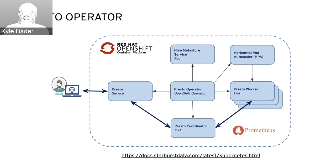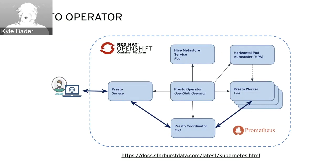The most recent contribution done in conjunction with Starburst was making available an operator in the OpenShift catalog. If you go to the big data section of the catalog in an OpenShift 4.2 cluster, you'll see an option to deploy a Presto operator through the OLM. That will add custom resource definitions to your Kubernetes cluster so that you can declaratively define custom resources that will result in a Presto cluster.